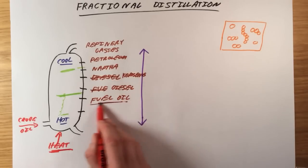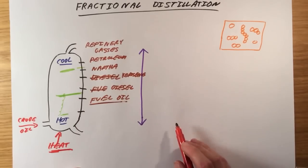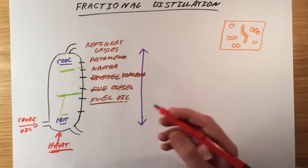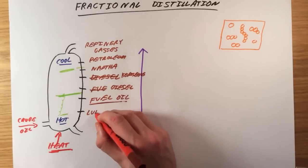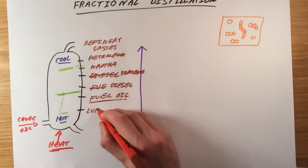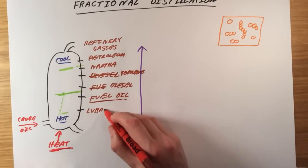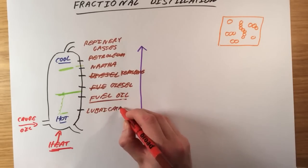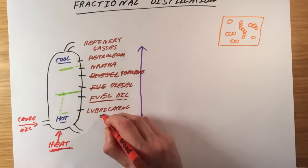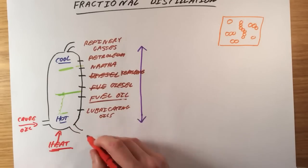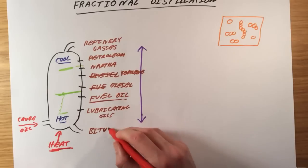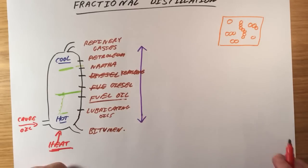Followed by fuel oil. This is used as fuel in big ships. Next, we get things which actually are too large to be able to use as fuels. So we get things called lubricating oils. And finally, the solids and residue we get left over, we actually use it to surface roads. So we do make use of it and we call it bitumen.